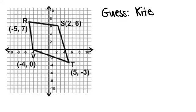So to show that it's a kite, I'm going to have to show that it has two pairs of adjacent congruent sides. So that means I'll have to find the length of all four sides and show that two pairs match up. So I'm going to find the length of RS, ST, VT, and RV.